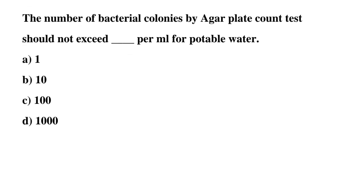Next question: the number of bacterial colonies by agar plate count test should not exceed — per ml for potable water. Option A: 1, option B: 10, option C: 100, option D: 1000. The correct answer is option C: 100.